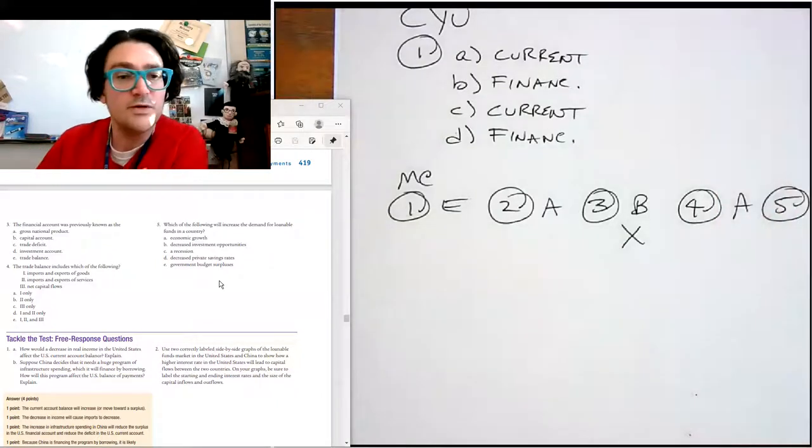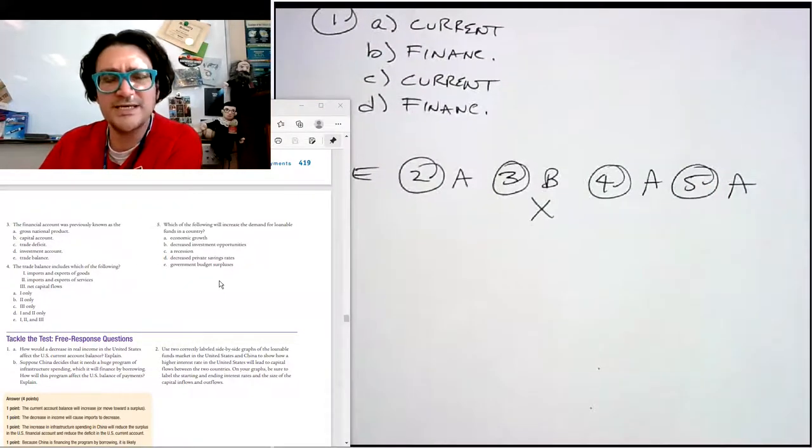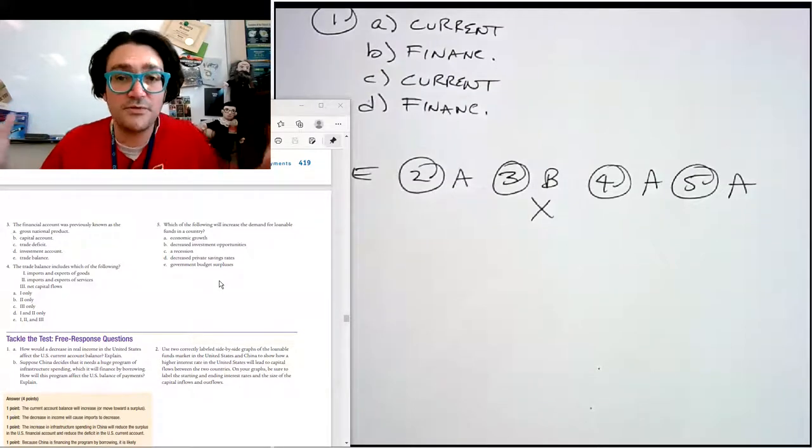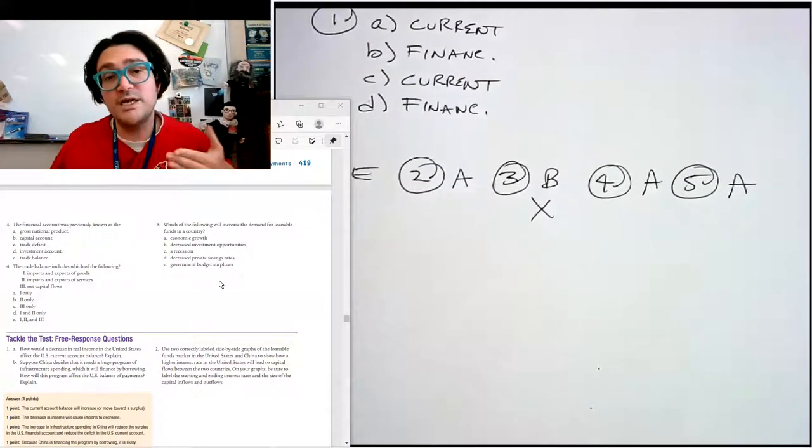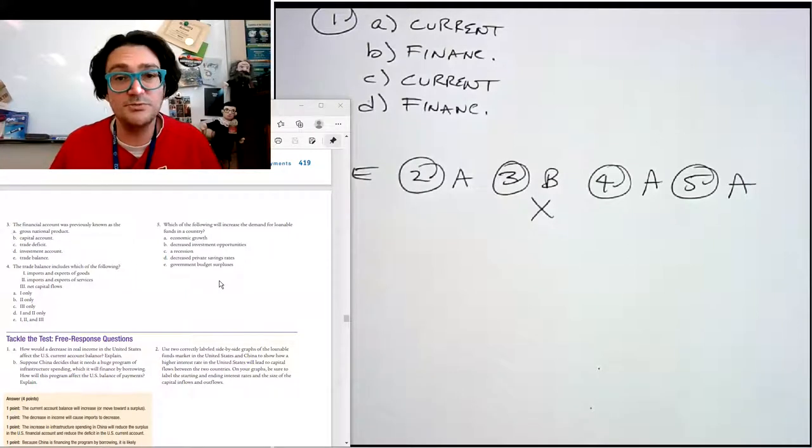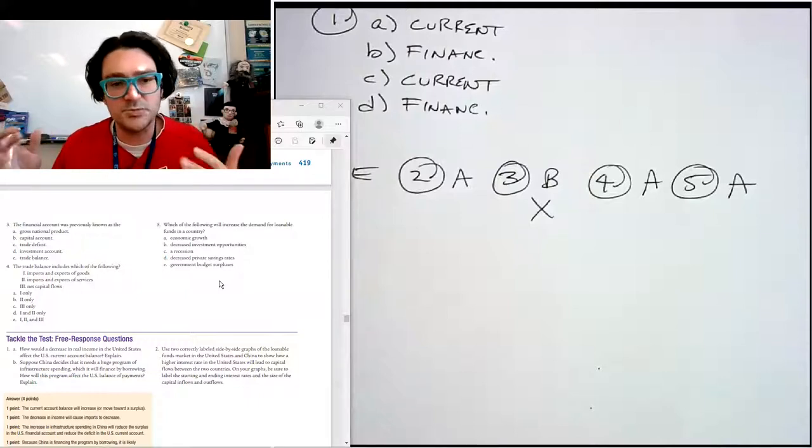Number five, which of the following will increase the demand for loanable funds, economic growth, that would do that. So thinking about that one, that's a little trickier, but the idea here is that if there's lots of business opportunities as a result of the economic growth, there's more growth. So people have more money. So if you run a business, you'd want to expand it. You want to buy another shop and build a new factory and buy more tools and ovens to make your pizzas and whatever. The other options wouldn't do that.